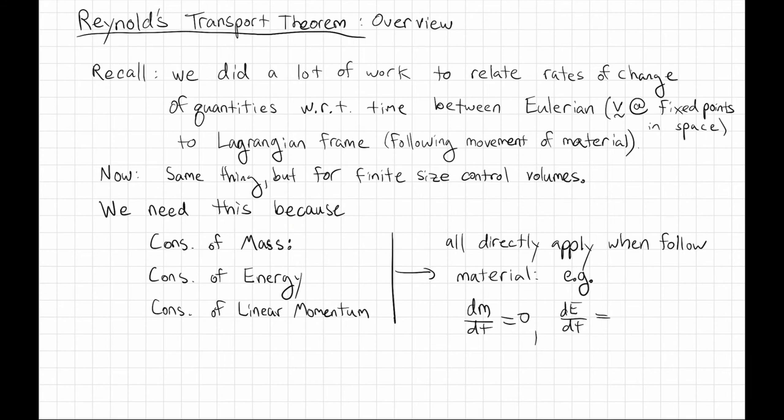The rate of change of mass is zero - that's conservation of mass when I follow a fixed amount of mass. The rate of change of energy depends on heat flux and work being done on a fixed chunk of material. And the rate of change of the total linear momentum of a system depends on the sum of the external forces. Those are all things that are written from the point of view of a fixed amount of mass.